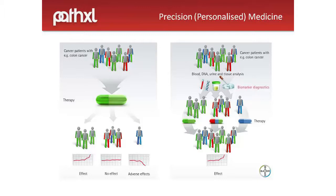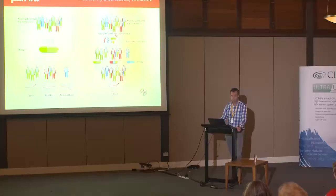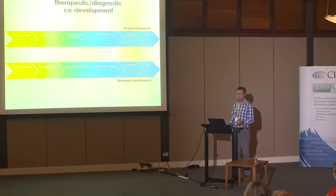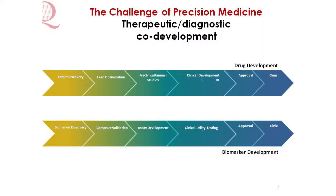A good example often used is breast cancer, which was originally considered to be a single disease but is now probably about 16 different diseases. The ability to identify and distinguish those patient groups and treat them in a personalized way is clearly a benefit in terms of clinical outcomes. But there's a real challenge: the co-development of the therapeutic agent and the associated companion diagnostic. Traditionally these two pipelines were very independent, but these two industries now have to come together.